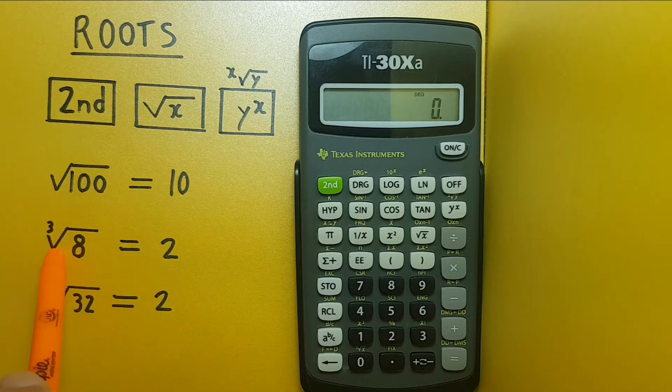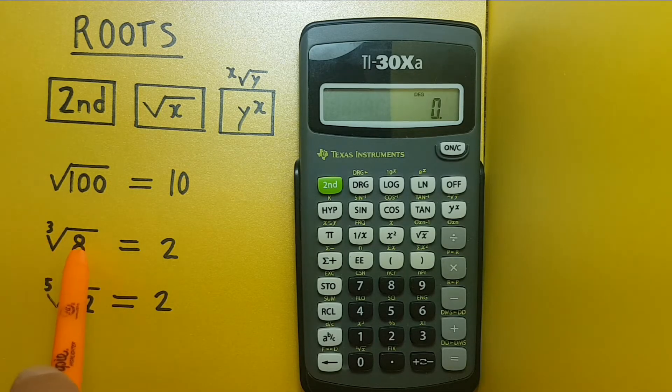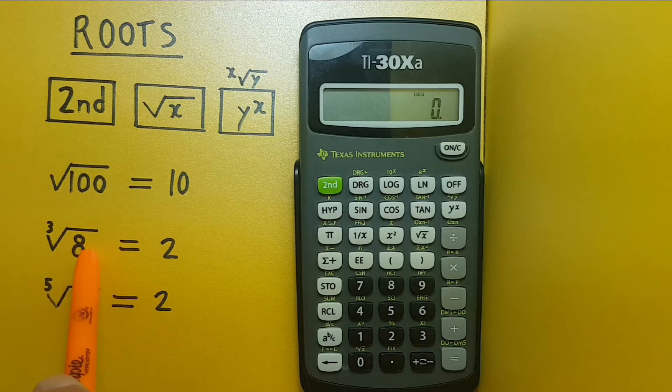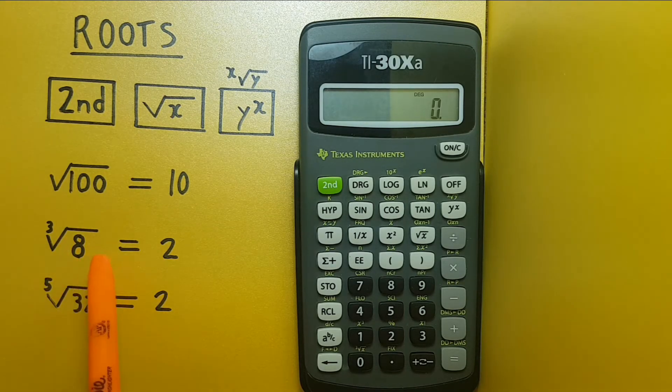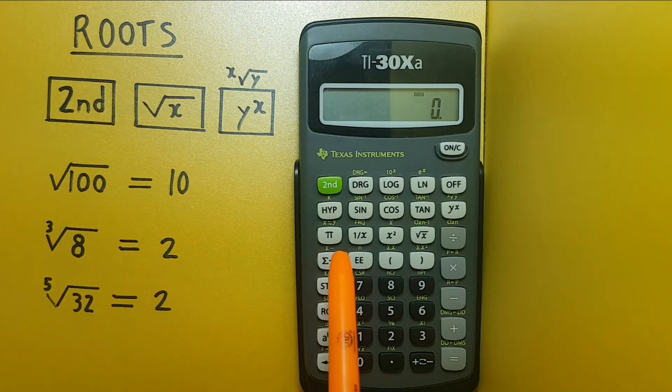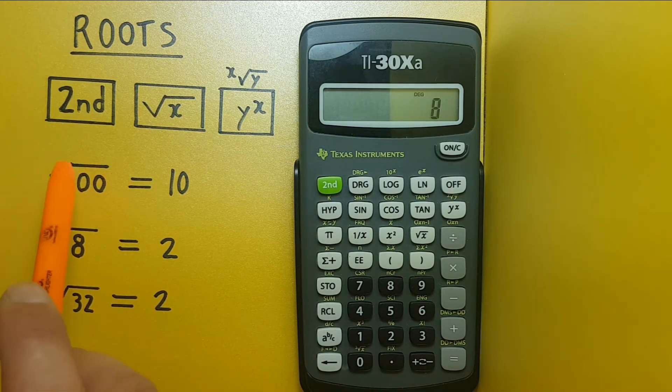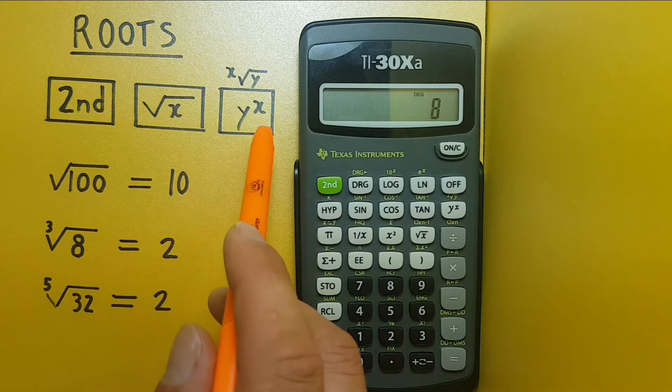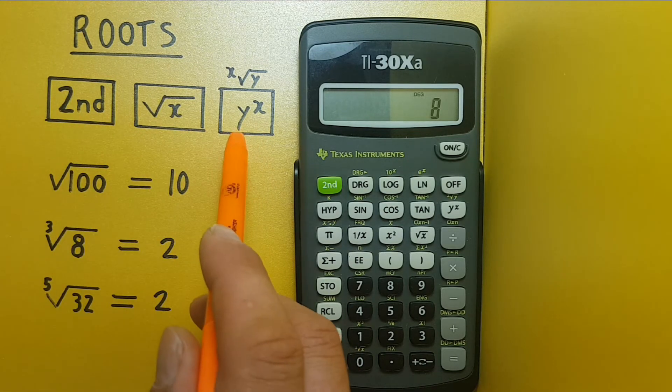How about a cube root? Well we know that 2 times 2 times 2 gives us 8 so the cube root of 8 should be 2. Again we go 8 but this time we don't have a cube root key so we'll be using the second function of the Y to the X key.